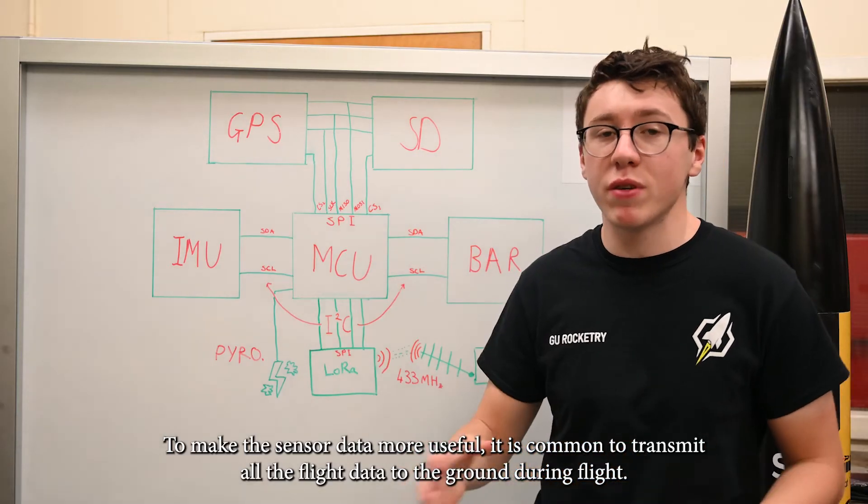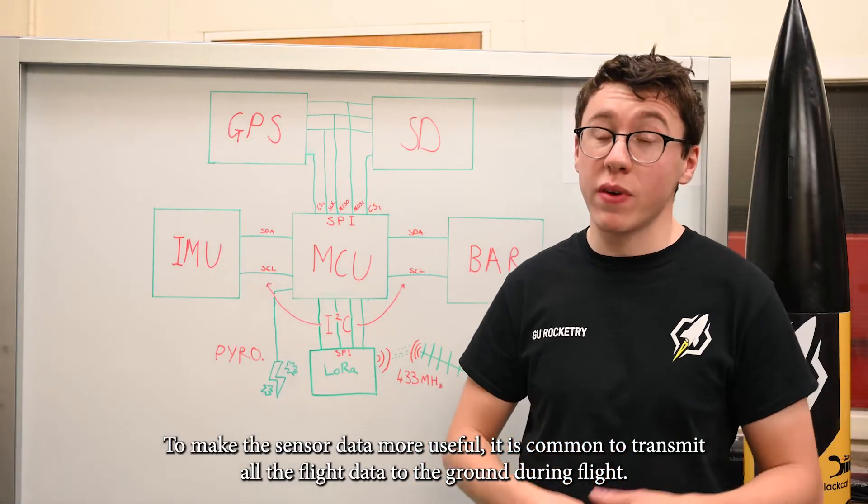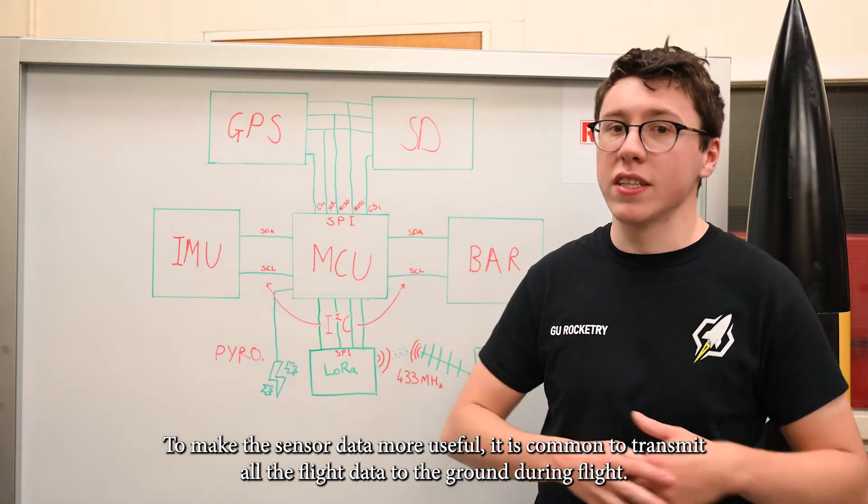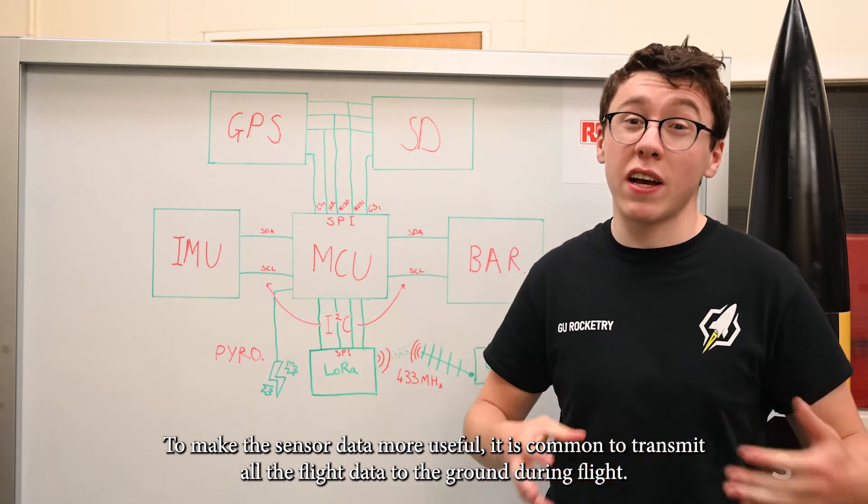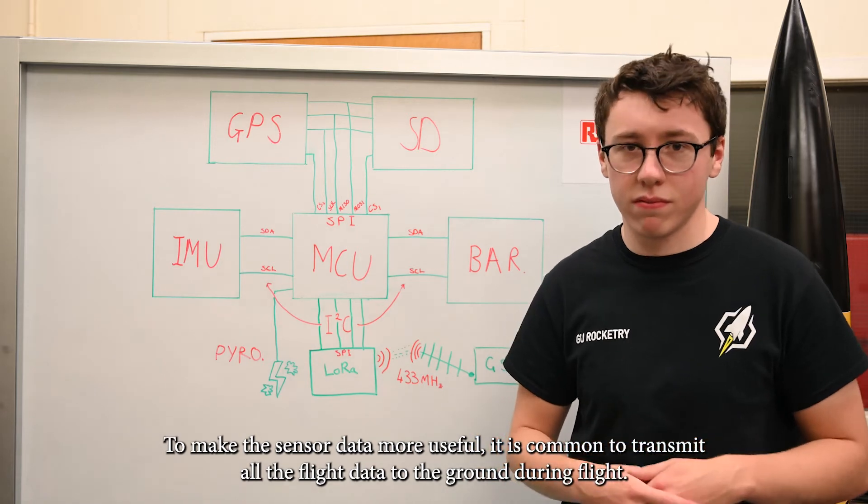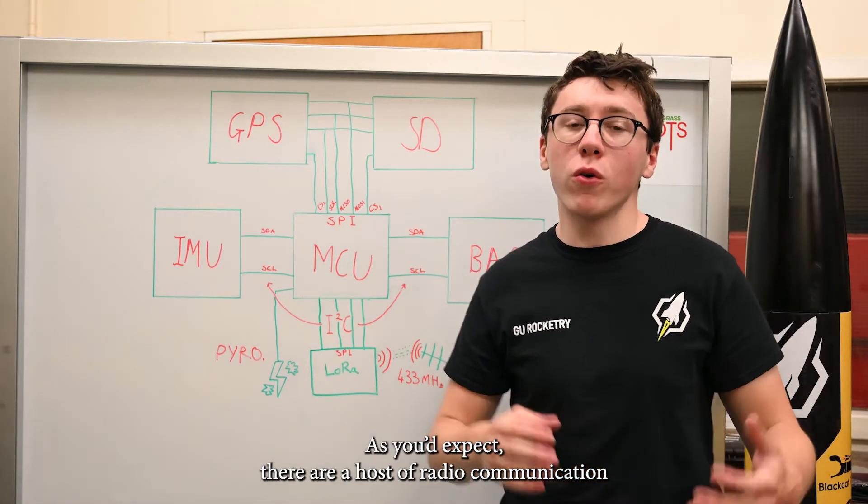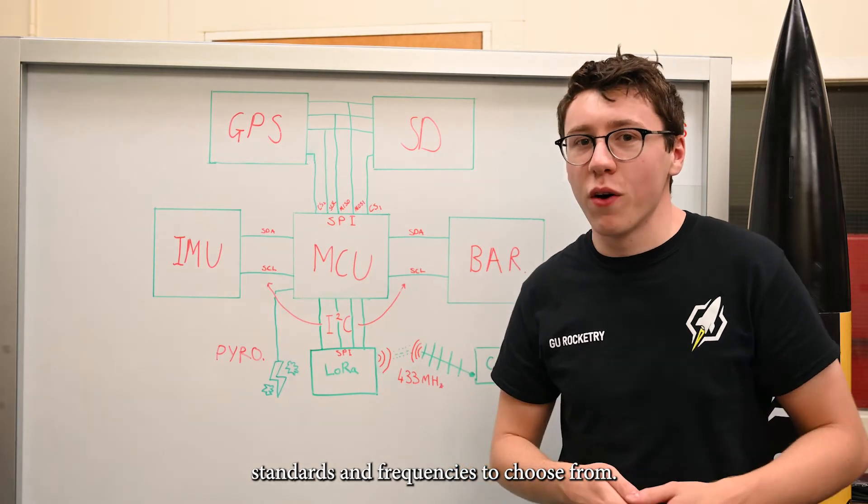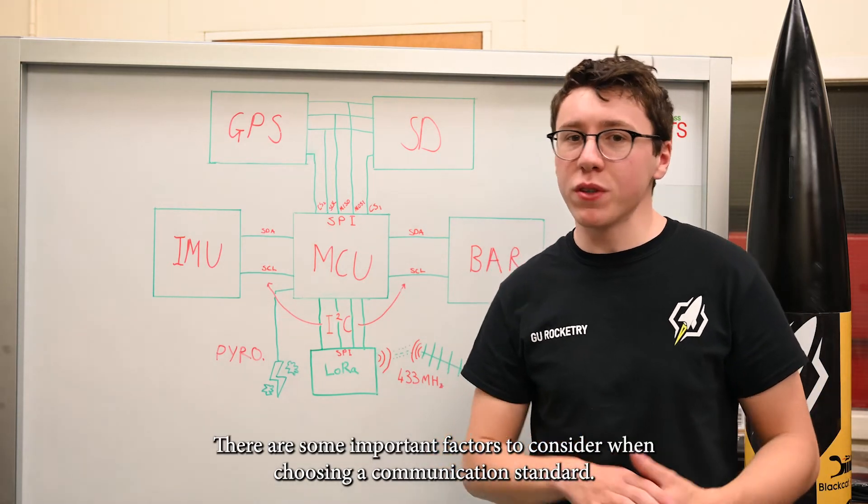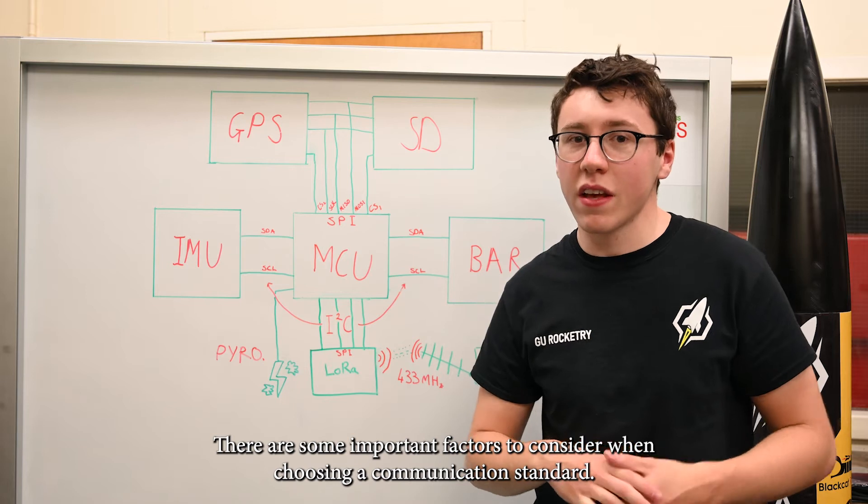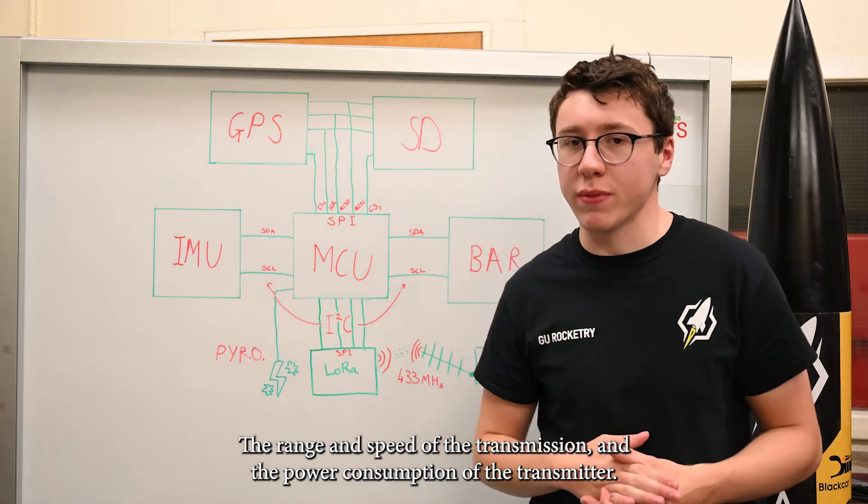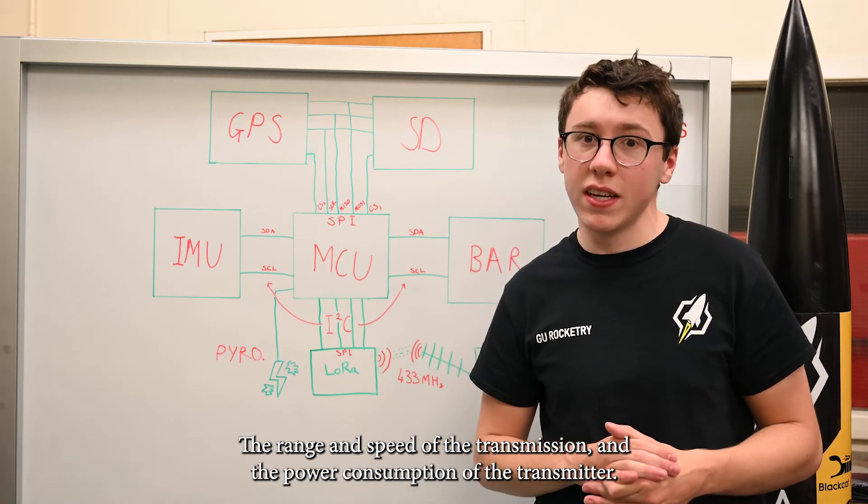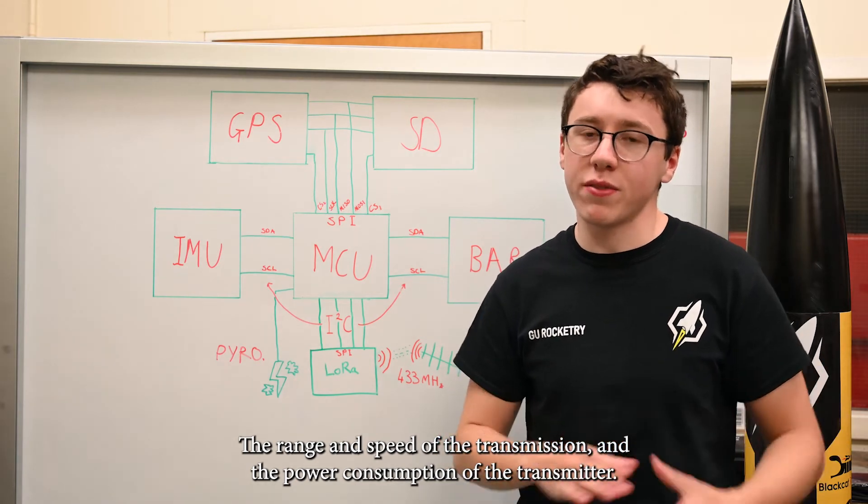To make the sensors that bit more useful, it's very common to transmit all the data, or parts of the data, to the ground during flight, used for in-flight analysis and tracking. As you expect, there are a host of different radio communication standards and frequencies to choose from. When making your decision, there are some important factors to consider: the range at which the data can be transmitted, the speed at which the data can be transmitted, and the power consumption of the transmitter.